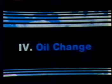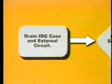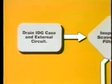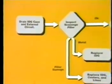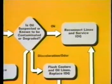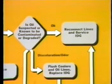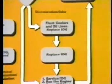When the oil in the IDG must be changed due to suspected or known contamination within the oil system, or as required by an airline scheduled maintenance interval, perform the oil change procedure. Changing the oil consists of: one, draining the oil from the IDG case and external circuit; two, examining the scavenge filter for signs of contamination or filter damage; three, examining the characteristics of the drained oil for abnormally dark color, odor, chemical contamination, or degradation; and four, replenishing the IDG system with oil.